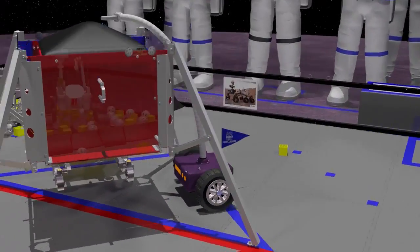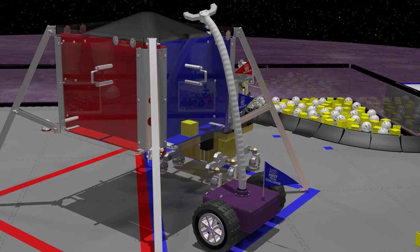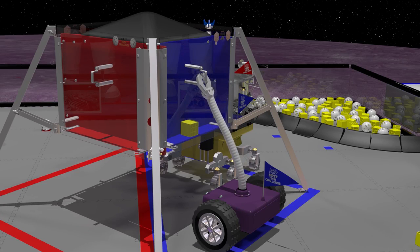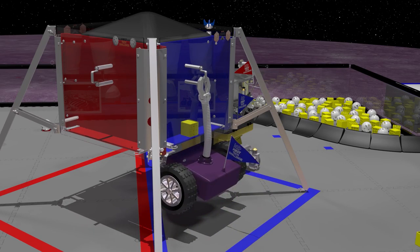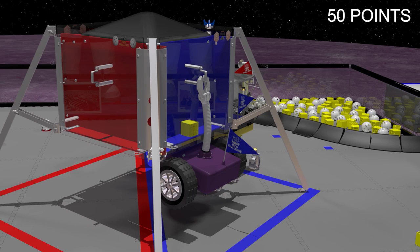A robot that is deployed from the lander during the match and latches back on during the endgame, lifting off of the playing field will earn 50 points for their alliance.